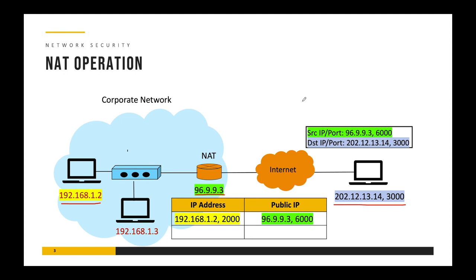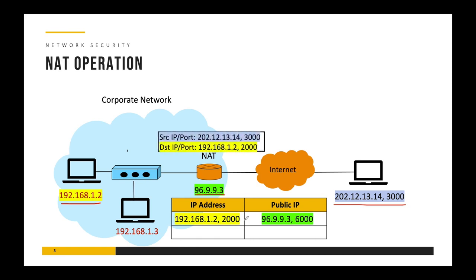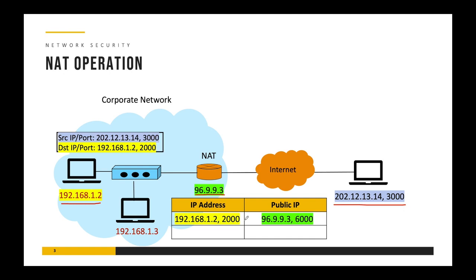From the perspective of the destination, it thinks the packet is coming from the NAT router because it only sees the NAT router's IP address and port number. So when the destination responds, it puts its own IP and port as the source, and puts the NAT router's IP address and port as the destination, then sends it back. When this packet arrives at the NAT router, it checks its table to find which private IP address it had replaced with its public IP and port 6000 — it finds 192.168.1.2 port 2000, replaces accordingly, and forwards the packet to the internal system. NAT performed this translation seamlessly and transparently, with the two end stations unaware of what happened in between.